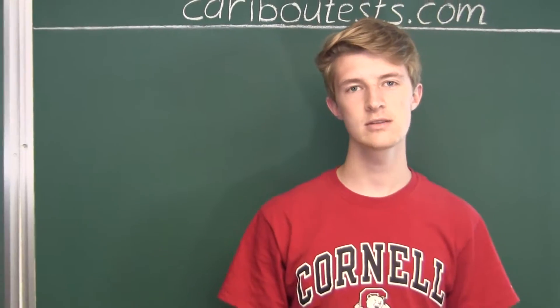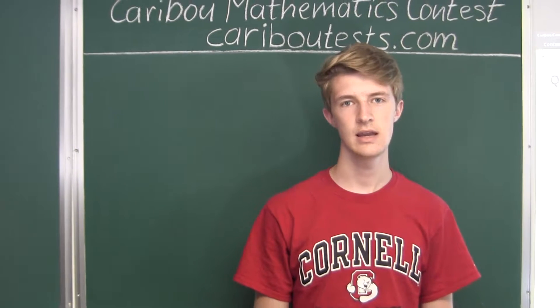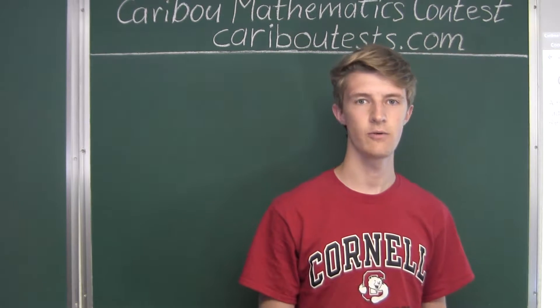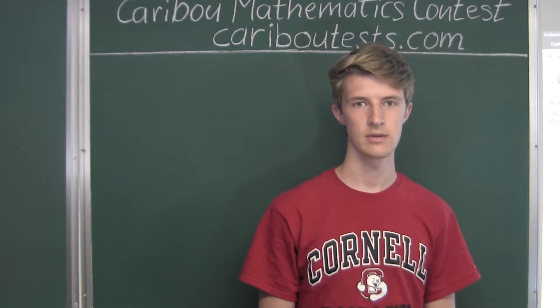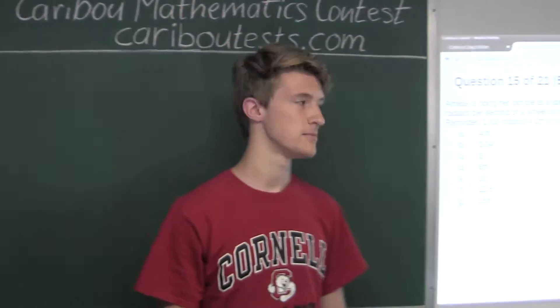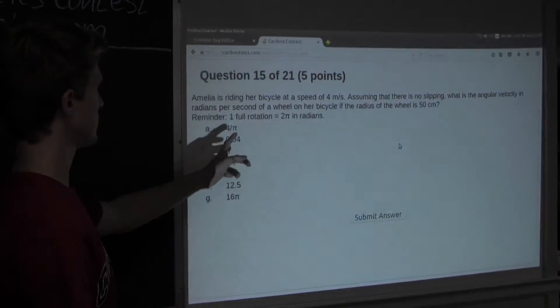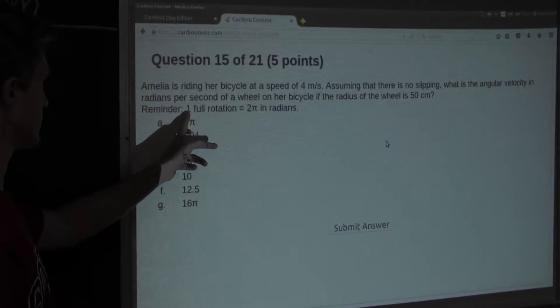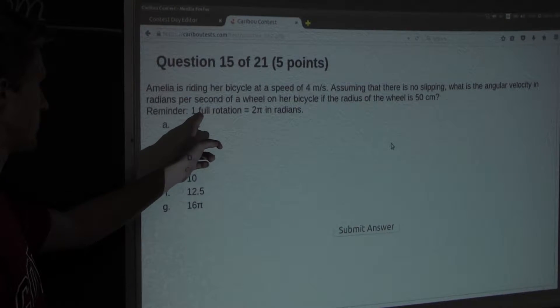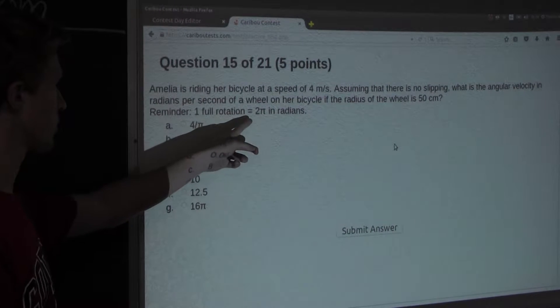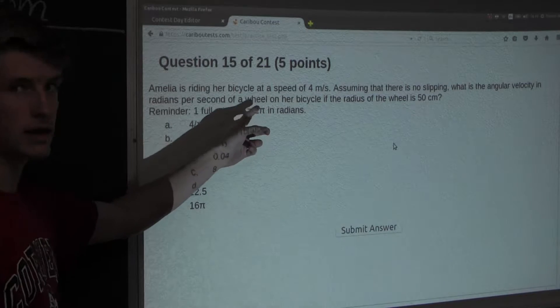Okay, so we want to find the angular velocity in radians per second for the bicycle wheel. Well, from the reminder we can see here's a conversion of the number of rotations with the corresponding angle in radians.